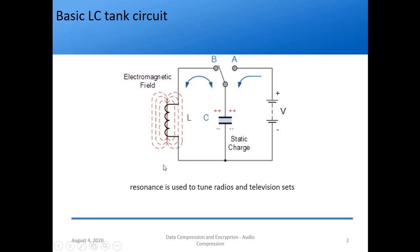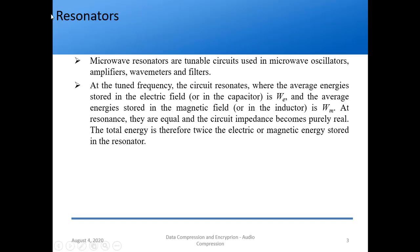This resonance is used to tune radios and television sets. Whenever you tune your radio to a particular frequency, for example 98.3, you are achieving resonance at that point where the L reactance equals the C reactance. Similarly, we study resonators but at the microwave frequency range. Microwave resonators are tunable circuits used in microwave oscillators, amplifiers, wavemeters, and filters.